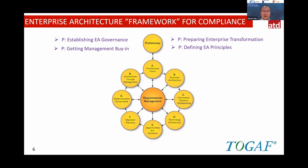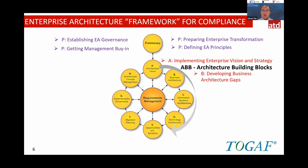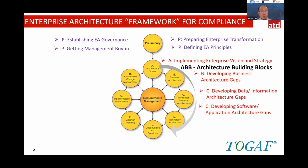We need to get the right management support, establish principles, and prepare the entire organization for transformation. In TOGAF phases A through D — the architecture building blocks — first we need to know the vision and strategy: where is the organization heading in its digital transformation? Once we know that, we understand what the business needs to change. Those gaps become the business architecture gap, then the data/information gap, application gap, and technology/infrastructure gap.